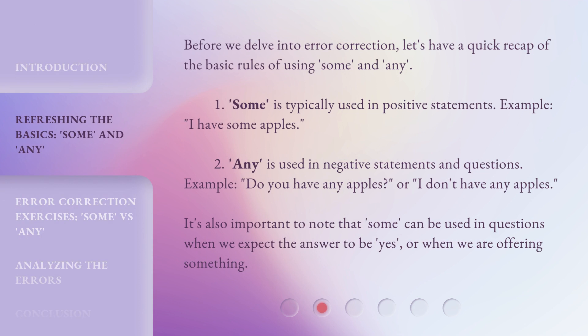Before we delve into error correction, let's have a quick recap of the basic rules of using some and any. 1. Some is typically used in positive statements. Example, I have some apples. 2. Any is used in negative statements and questions. Example, do you have any apples? Or, I don't have any apples.